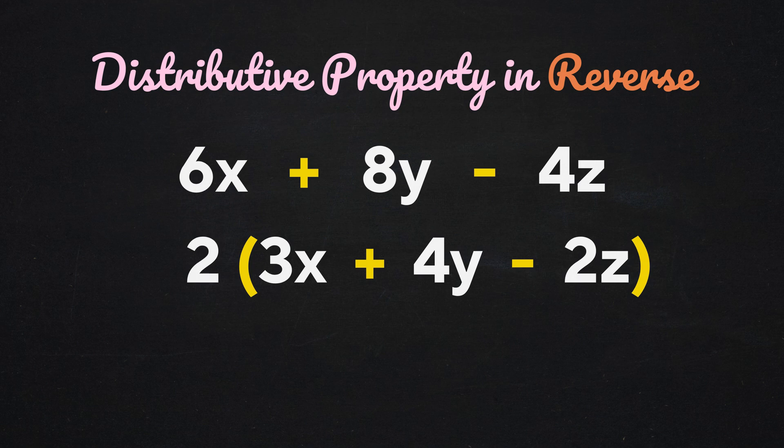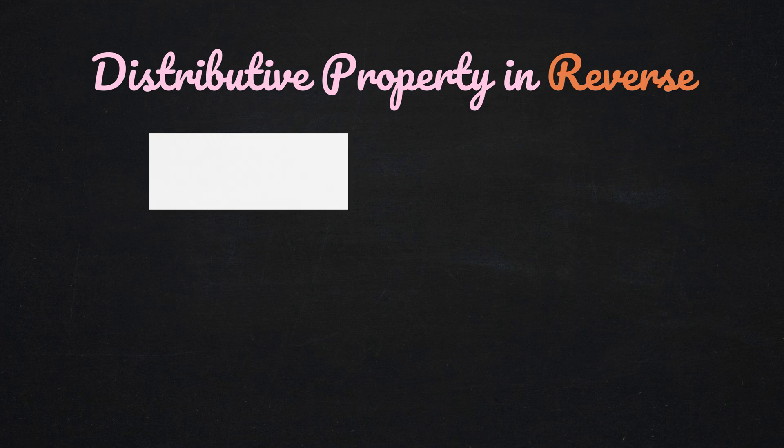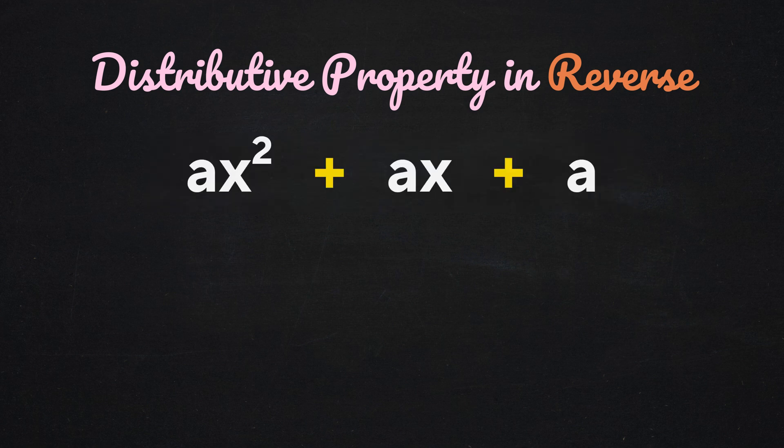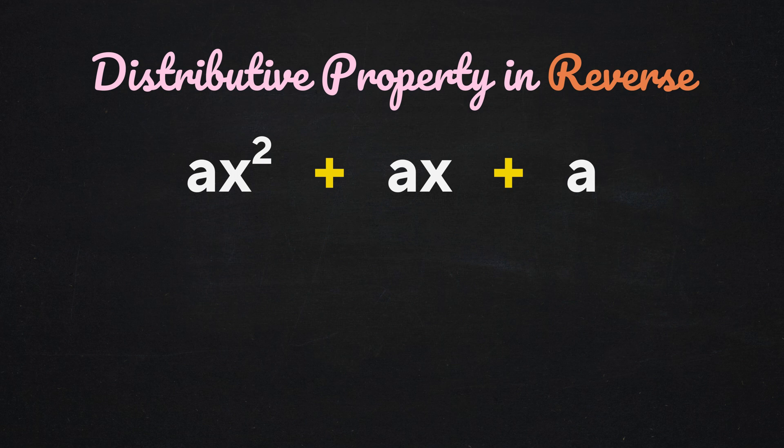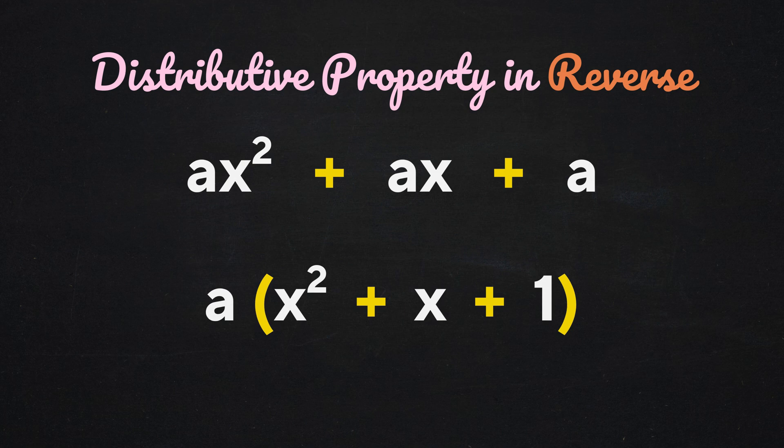And it works exactly the same way for variables too. What if we have the polynomial ax squared plus ax plus a? Each of these terms has the common factor a, so you could undistribute or factor out the a. Notice that when we do that to the last term, which was just a, that term becomes a 1, because there is always a factor of 1 being multiplied by any term.